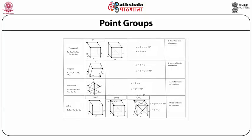Fourth, the tetragonal system: all angles equal, two length parameters equal and the third different; it has a four-fold axis of rotation; point groups include S₄, D₂d, C₄, C₄ᵥ, D₄, D₄ₕ, etc. Fifth, the trigonal system: all length parameters equal and all three angles equal but none is 90°; it has a simple three-fold axis of rotation; point groups C₃, S₃, D₃, D₃ₕ, etc.